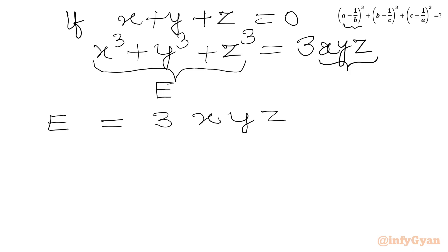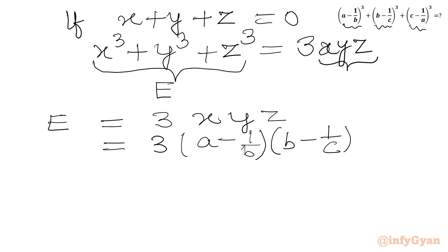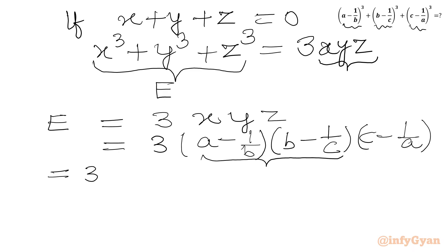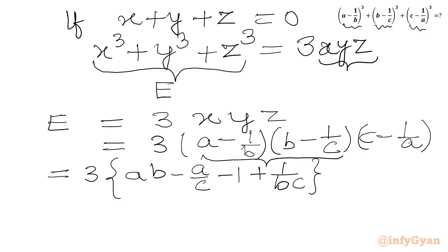Now let's plug in the values of x, y and z. So E equals 3 times (a minus 1/b) times (b minus 1/c) times (c minus 1/a). Multiplying the first two brackets: ab minus a/c minus 1 plus 1/(bc).